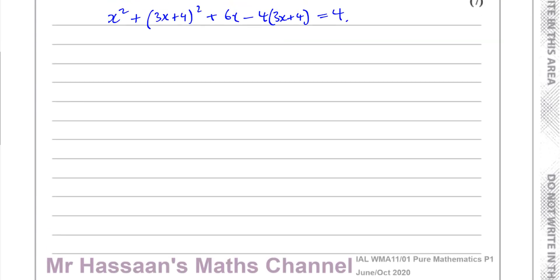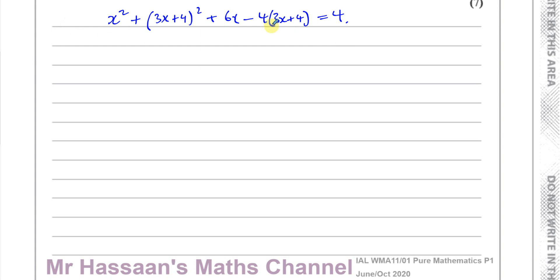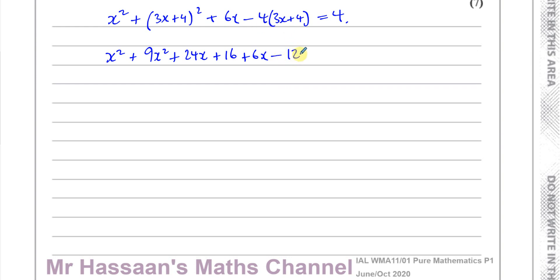Now I'll simplify and solve this equation. I have x squared plus (3x plus 4) squared — remember this means (3x plus 4) times (3x plus 4), not just squaring each term. Expanding: square the first term gives 9x squared, the middle term is 2 times 3x times 4 which is 24x, and the last term squared is 16. Then plus 6x minus 4 times (3x plus 4) gives minus 12x minus 16, equals 4.